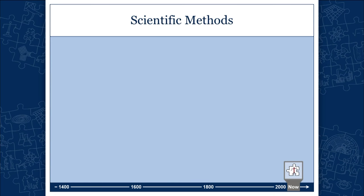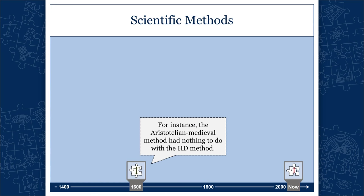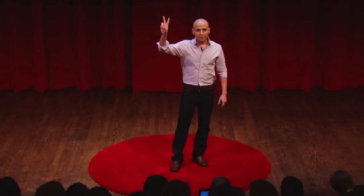My question is: is this method unchangeable? Is this method trans-historical and fixed? If we suppose for the sake of argument that this is the method of contemporary science, is this method unchangeable? Is it a fixed method of science? And there is no other way of saying this — the answer is no. I am going to show a few examples from the history of science. First, we go back to the early 17th century, the time of Galileo. If we observed what scientists back then were expecting from theories, we would see that their expectations had nothing to do with our hypothetical-deductive method.